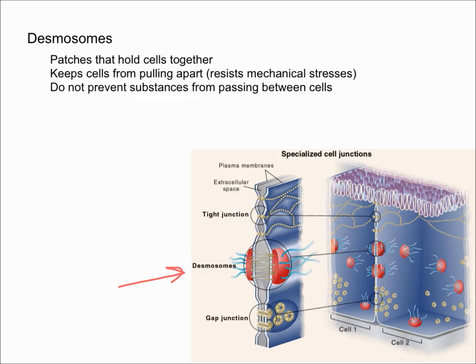Desmosomes are most commonly found in the epidermis, the epithelia, and cardiac muscle. As you can see down here, desmosomes are circled right there—I drew the red arrow pointing to it.